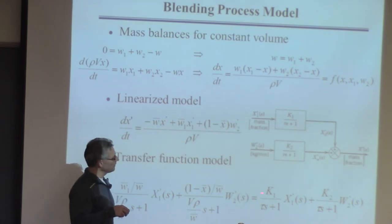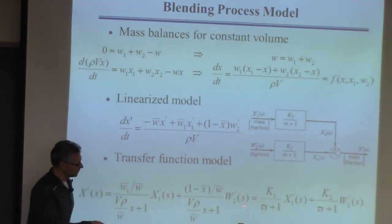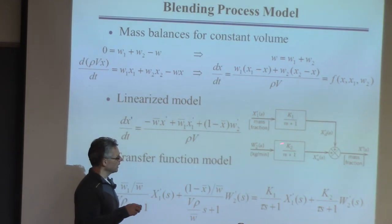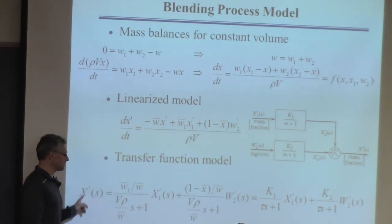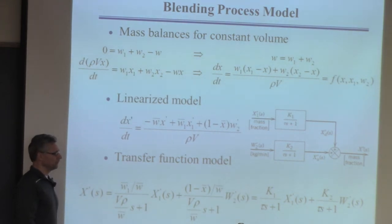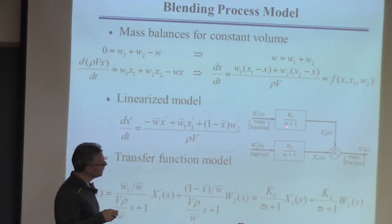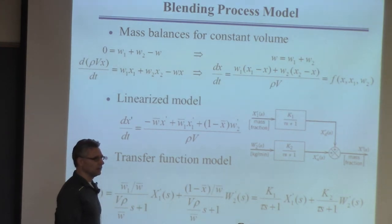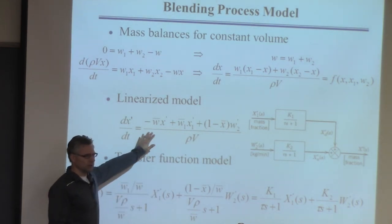That's written algebraically in terms of Laplace transforms and transfer functions. This equivalent block diagram says X1′ goes through transfer function G1 (representing the disturbance), W2 goes through transfer function G2 (representing the manipulated input), and I add the two together — the result is X. It's just a block diagram representation of that algebraic equation. This is how the disturbance input and the manipulated input affect the output of interest. That's the process model — no control in any of this yet.